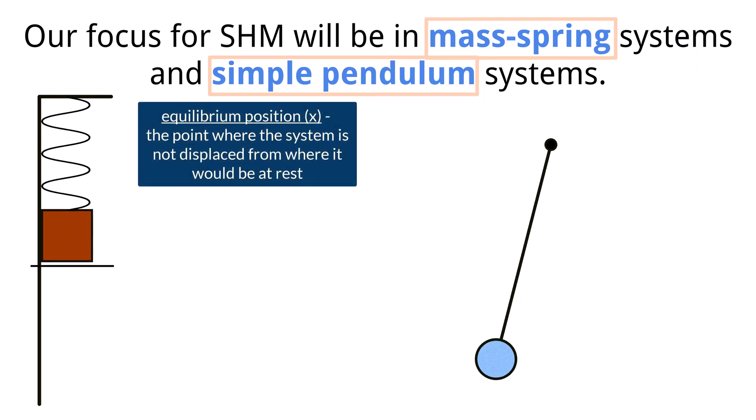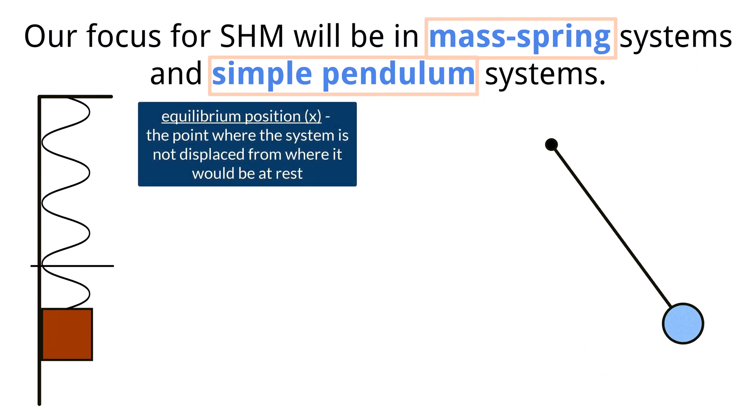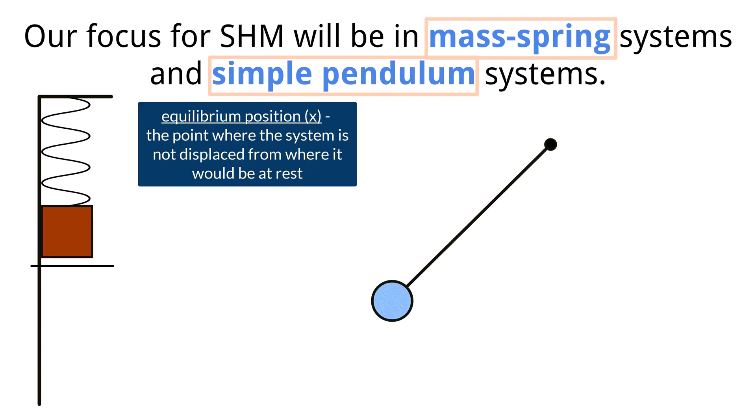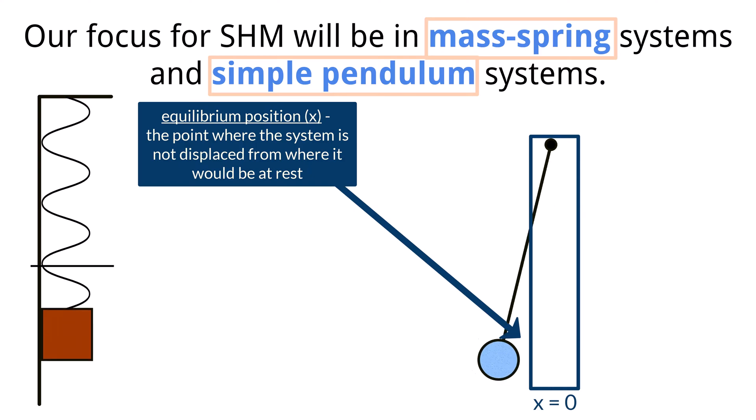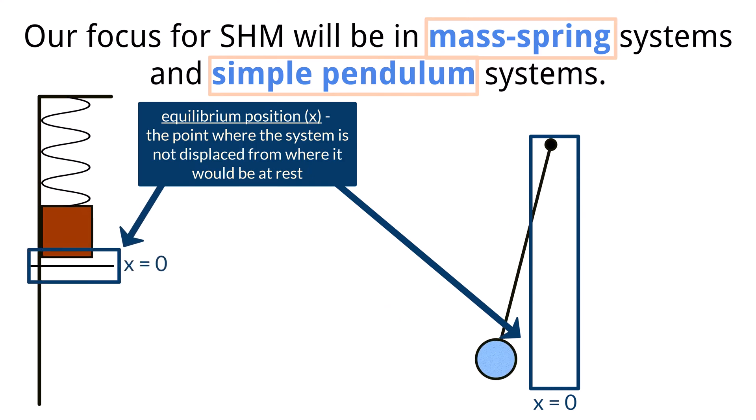The equilibrium position - as shown earlier, it is the point where the system is not displaced from where it would be at rest. This corresponds to the bottom most point of the swing in the pendulum and the rest position of the spring in the mass spring system.